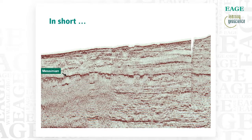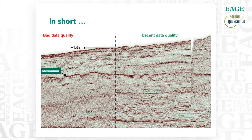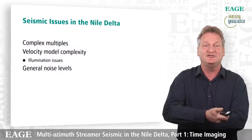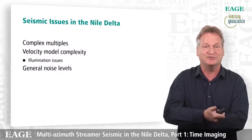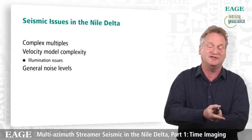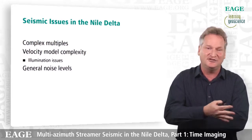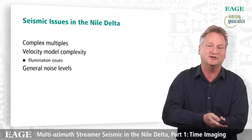In short, when we look at the Nile Delta, from about a water depth of around one and a half seconds, you go from fairly decent data quality on the right side of the picture to quite poor data quality on the left side, especially in the deeper section below the Messinian. To summarize, the issues in the Nile Delta are complex multiples, velocity model complexities associated with the Messinian which cause illumination issues, and general noise levels that we need to resolve.